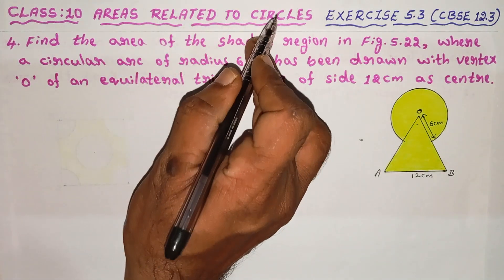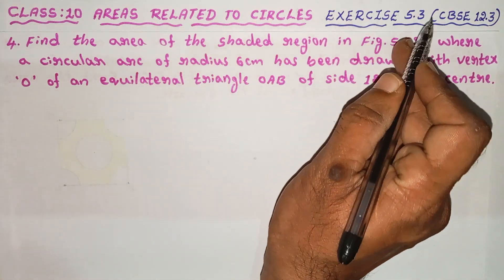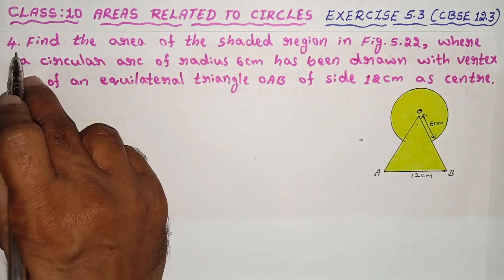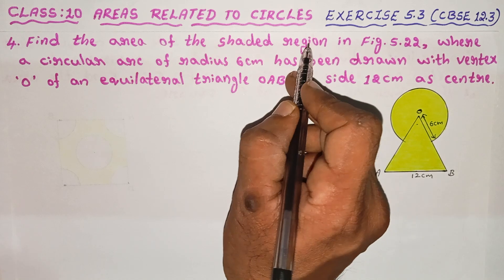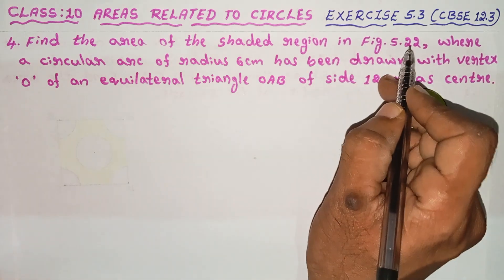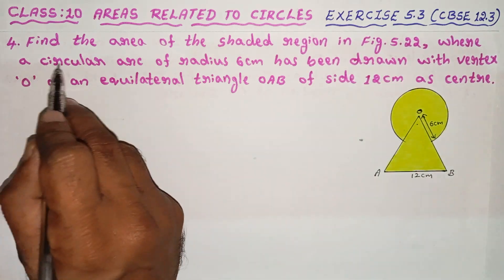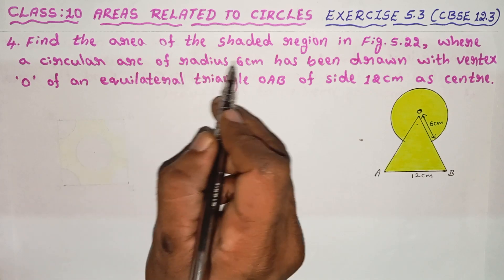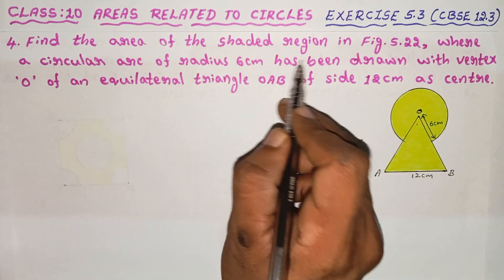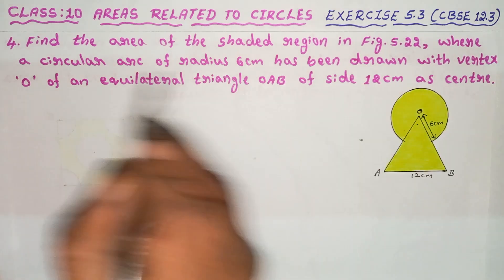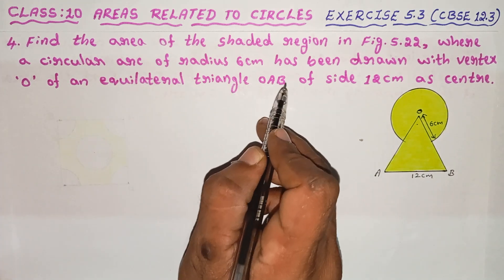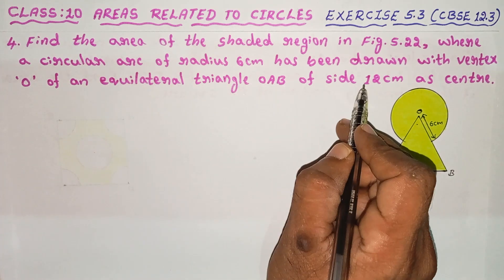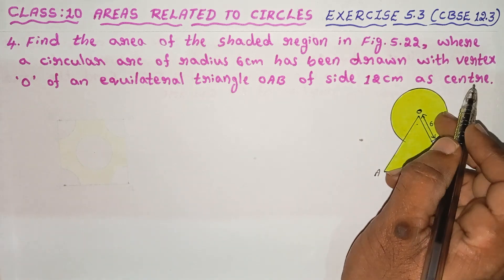Class 10. Areas related to circles. Exercise 5.3, fourth problem. Find the area of the shaded region in figure 5.22, where a circular arc of radius 6 cm has been drawn with vertex O of an equilateral triangle OAB of side 12 cm as center.